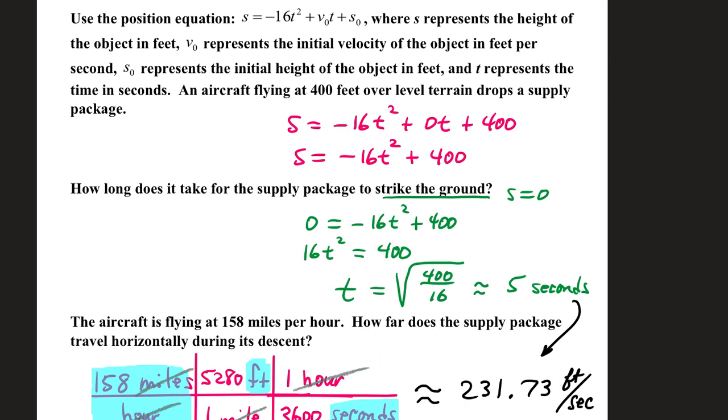Use the position equation. Now this one's the same from the previous slide. All the descriptions are the same. An aircraft flying at 400 feet over level terrain drops a supply package. Drops doesn't have any kind of help, it's just flying along and dropped. So our V sub 0 is 0. This is gravity, and the aircraft is flying at a height of 400 feet.